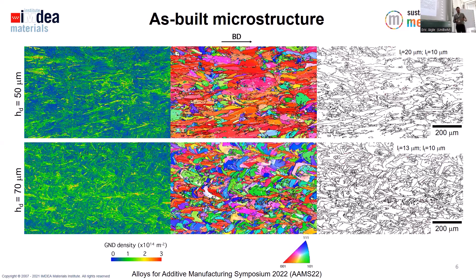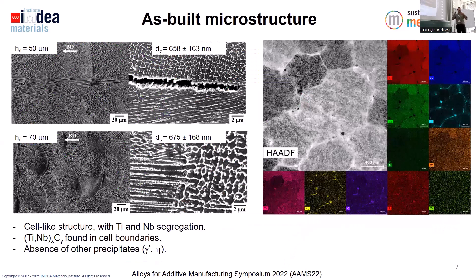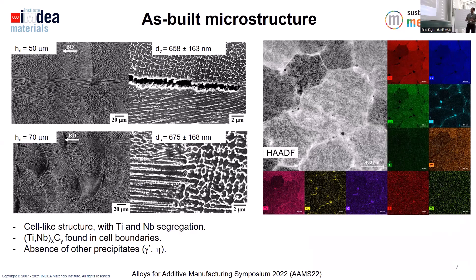The differences in microstructure depending on the scanning parameters are significant. When it comes to the solidification cell structures, they are quite similar in both cases and the cell size does not change much. TEM characterization shows clear segregation of titanium and niobium at the cell boundaries and grain boundaries, as well as some particles which are titanium and niobium-rich carbides. We could not determine the exact composition, but we know we have carbides inside.